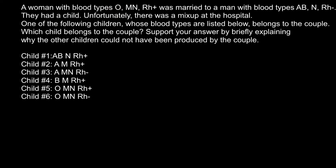Blood group O and AB — this is the ABO blood group system. MN and N belong to the MN blood group system, and Rh positive and Rh negative factors are also one of the characteristics of the blood. All three characteristics are important because in blood transfusion, mixing up any of these can cause the recipient to die due to blood clotting and immune response.